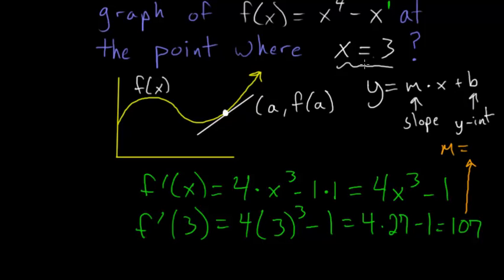so 107 is equal to the slope in our line here. So now we know the equation of our line is just y = 107x + b so now we just have to figure out what b is and we know what x is since we're given that it's equal to 3 and we can figure out what y is by just plugging this 3